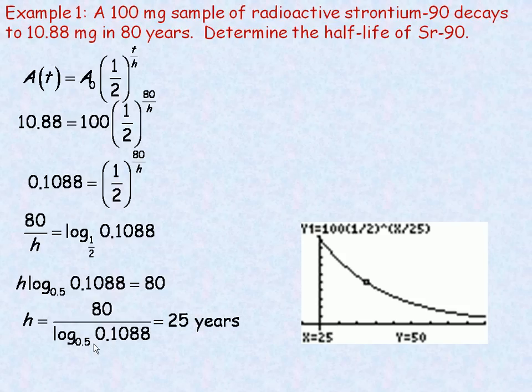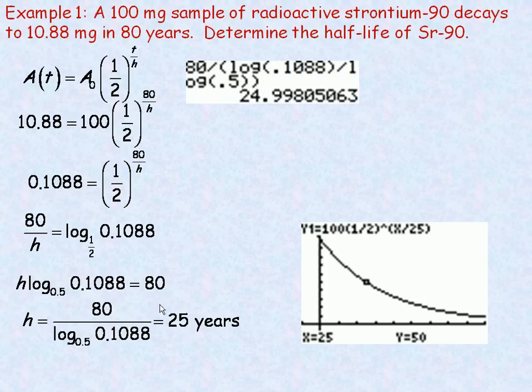And so if we divide 80 by the logarithm of 0.1088 base one-half, we end up getting 25. Now, this is what the calculation looks like in a scientific calculator. It's not log base 10, so you have to account for that. I start with my 80 up here. And since it's a logarithm of 0.1088 base one-half, I would take the log of 0.1088 and divide that by the log of 0.5. That gives me 24.998 years, so it's almost exactly 25 years.